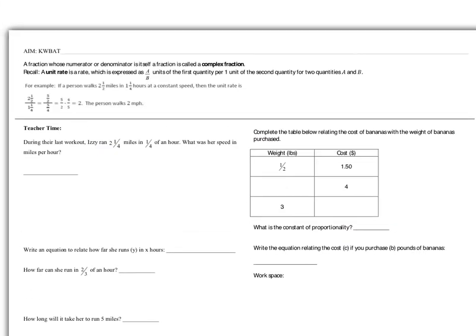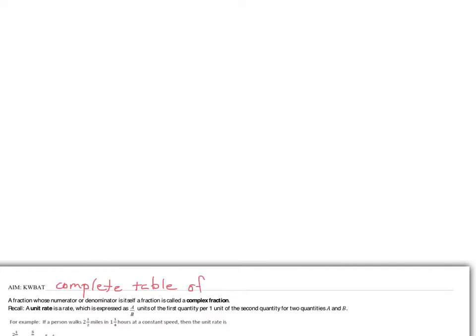Let's go ahead and write down the aim for today. Today's aim is that students will be able to complete tables of proportional relationships. We're going to do that by following up on information we've already learned in this unit and information we used yesterday — writing equations and using those equations to help find the missing pieces of tables.